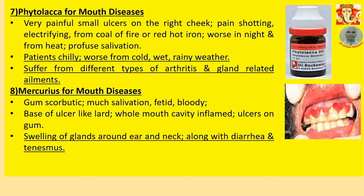Number 8: Mercurius for mouth diseases. Gum scorbutic with spongy gum. Much salivation — fetid and bloody. Base of ulcer like lard. Whole mouth cavity inflamed with ulcers on gum. Swelling of glands around the ear and neck. Along with diarrhea and tenesmus as concomitant symptoms — gland affections, diarrhea, or tenesmus pointing to Mercurius for mouth diseases.